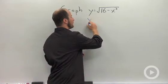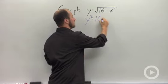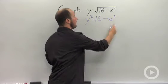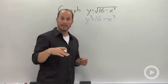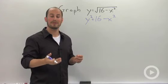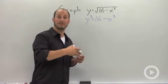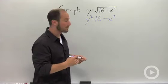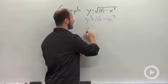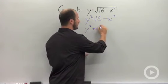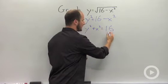And we end up with y squared is equal to 16 minus x squared. And then what we see is that we are dealing with a conic section. We have x squared and y squared. We want to get those to the same side so we can see what we're working with. And we end up with y squared plus x squared is equal to 16.